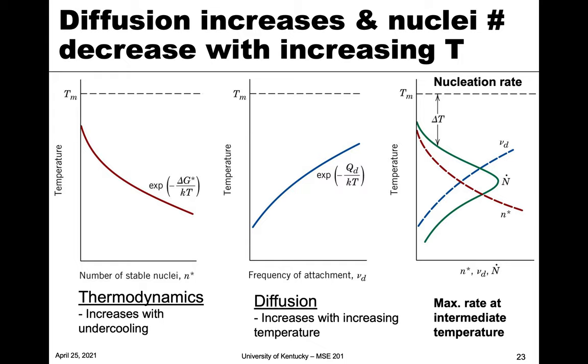On the other hand, we also have to consider diffusion. So for a stable nuclei to form, for a particle to grow, we have to have attachment of atoms and molecules to this new phase. And so diffusion, as we're very much aware from that chapter, increases with increasing temperature. So the diffusion rates increase with increasing temperature. That's related to the activation energy here, Qd. So that increases with increasing temperatures.